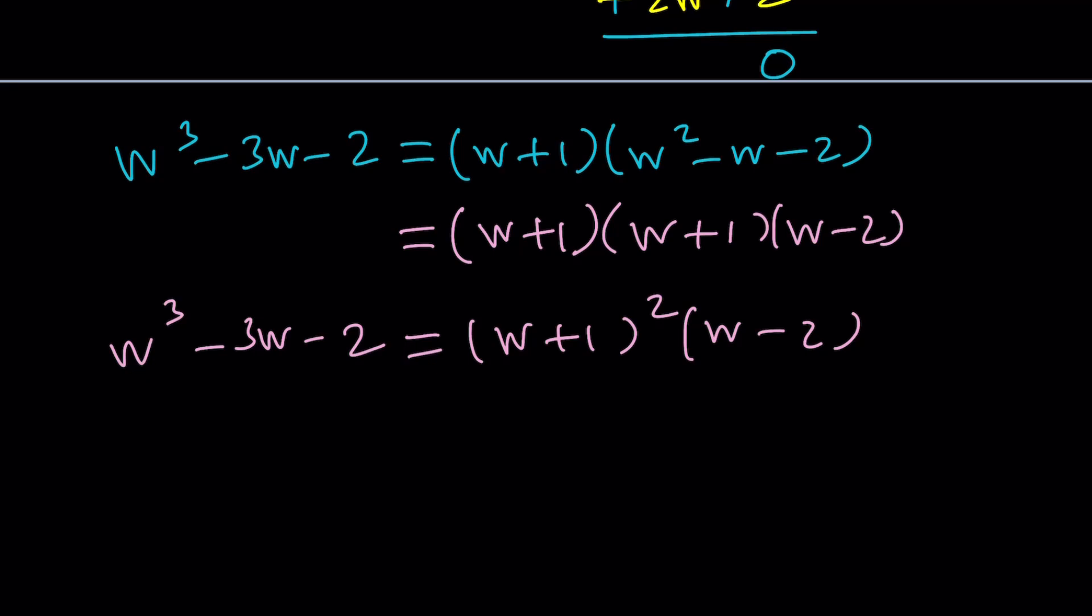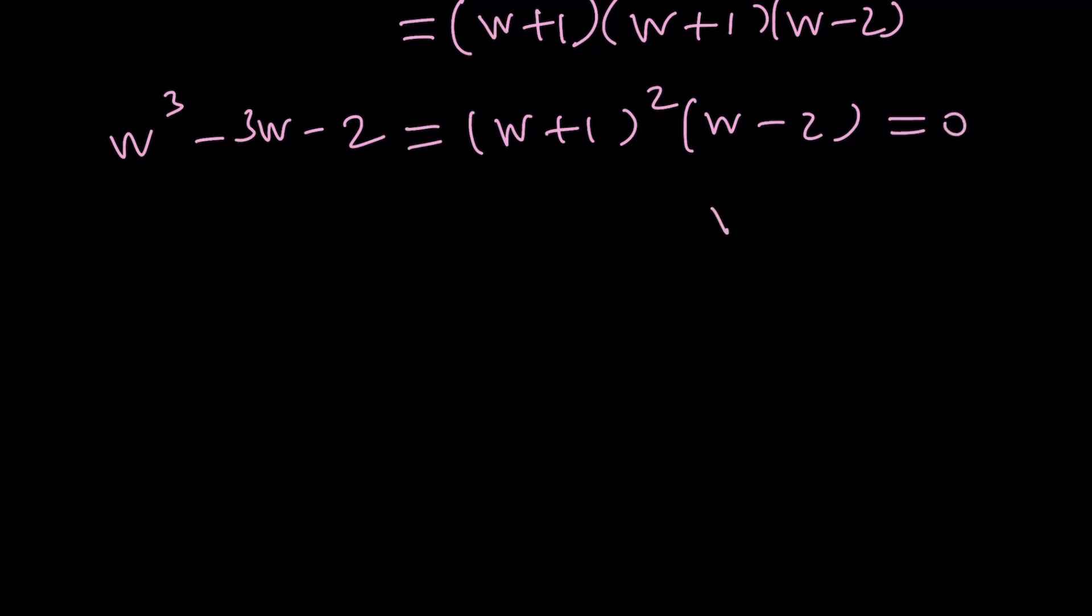And now, you know what that means. We have a double root, double solutions. Negative 1 is a repeated root. Does it matter? No, not really. That's why we have two solutions, seemingly two solutions. But there should be three, right? So, let's go ahead and after setting this equal to 0, we get w equals negative 1 as well as w equals 2.